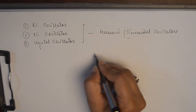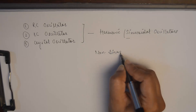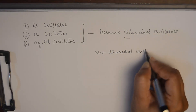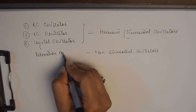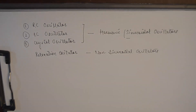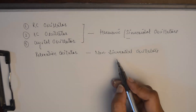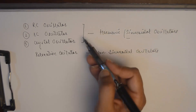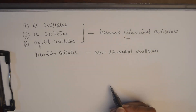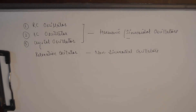In the category of non-sinusoidal oscillators we have the relaxation oscillator. The output of a relaxation oscillator would be a square wave, triangular, or sawtooth wave. I will cover these types of oscillators in detail in future videos. I hope this tutorial on oscillators and the Barkhausen criteria of oscillations was helpful in understanding the concepts and conditions required to get sustained oscillations. See you soon — more videos to come. Have a good day. Bye.